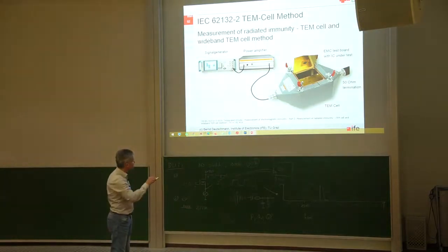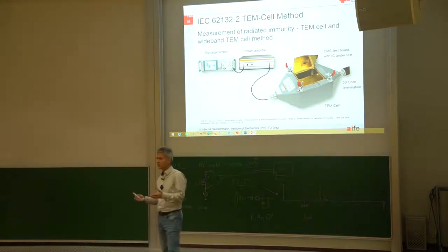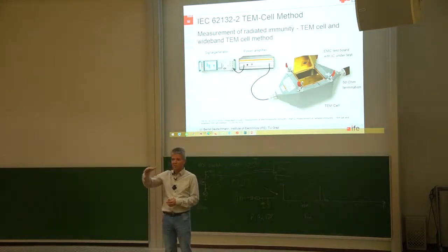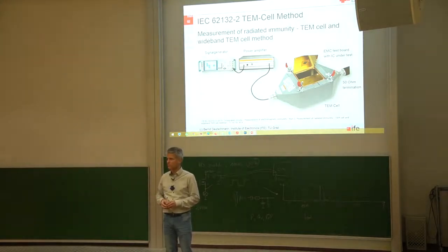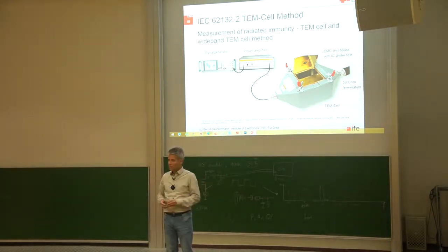And inside we can generate quite a lot of electric and magnetic fields because the distance from the IC to the septum is not that big, about 4.3 centimeters. So inside we can easily generate 1,000 volt per meter.